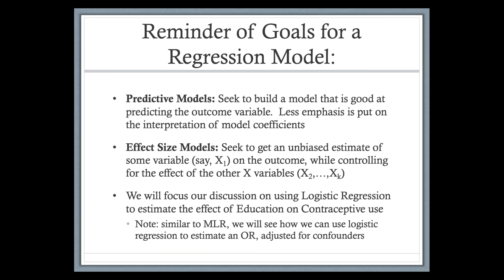In a moment we'll get into introducing logistic regression, but before we do, a quick reminder that models generally tend to be predictive or effect size. Predictive is where we want to build a model that's good at predicting the outcome — in the context of the Fiji fertility data, that would be predicting whether a woman is using contraceptives, yes or no. Effect size is where we want an unbiased or less biased estimate of the effect of some variable X1 on the outcome while controlling for other variables — for example, what effect does education have on contraceptive use.